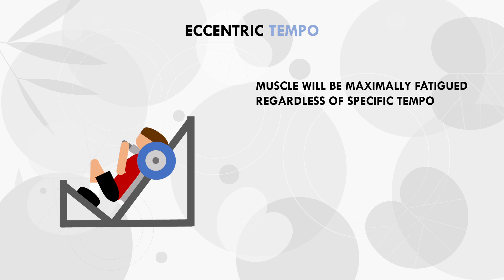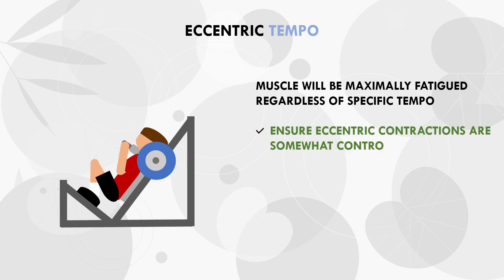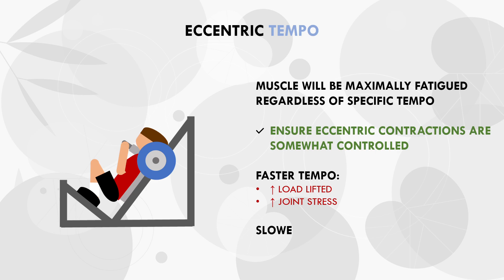This is probably because when taking sets fairly close to failure, we will reach the same point of fatigue through dynamic muscle contraction regardless of the exact repetition speed. However, we still want to ensure each repetition is somewhat controlled so that the muscle is actually required to perform the eccentric muscle action. If we use a very fast tempo, the muscle may not really be working - we may just be using gravity to lower the weight. So although the exact eccentric tempo doesn't really impact muscle growth directly, using a faster tempo will allow us to lift heavier loads, increasing joint and connective tissue stress. Therefore, it is probably a good idea to prefer a slightly slower eccentric tempo.